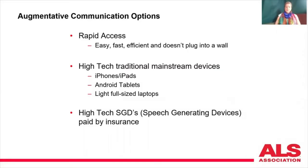There are several different alternative communication options. Alternative communication is also known as AAC, and you might hear me use that acronym. It is also referred to as SGD — speech generating devices. They're interchangeable. People that need some form of communication help have several options: rapid access, which is fast efficient communication that doesn't plug into the wall; high-tech traditional mainstream devices; and insurance devices. I'm going to talk about all three of these strategies today.